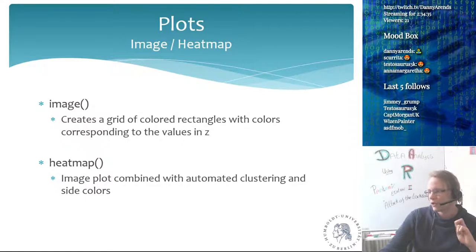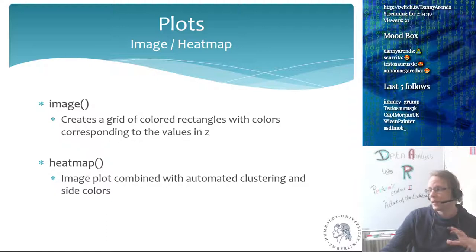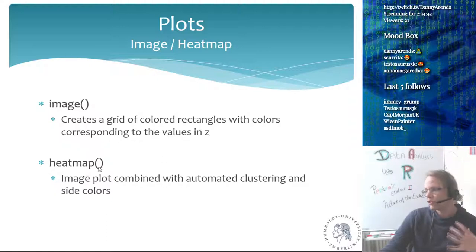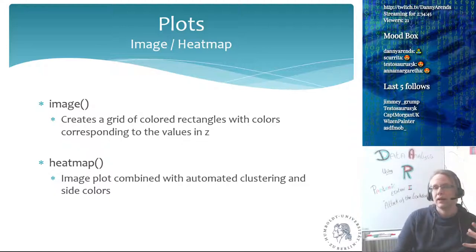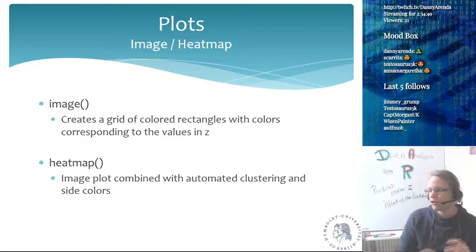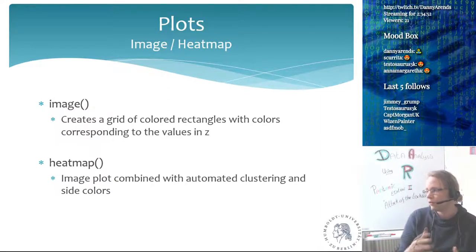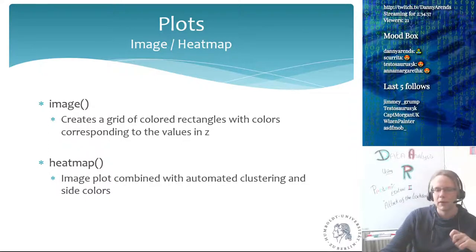Heatmap.2 still suffers from the same problems: the dendrograms on the side take up some of the margins, making it difficult to draw additional lines in the plot — which is very easy to do with the image function. The heatmap function internally uses the image function as well.